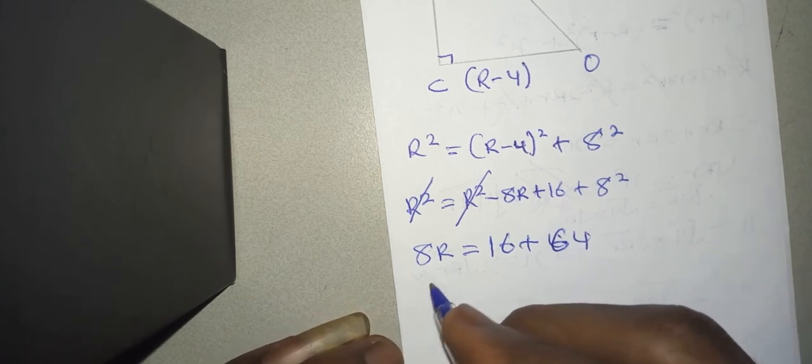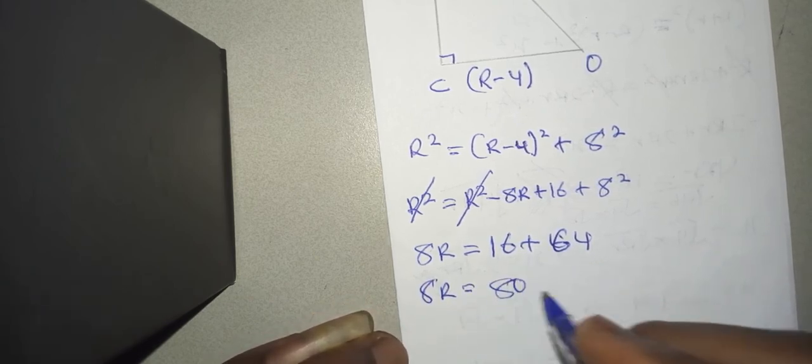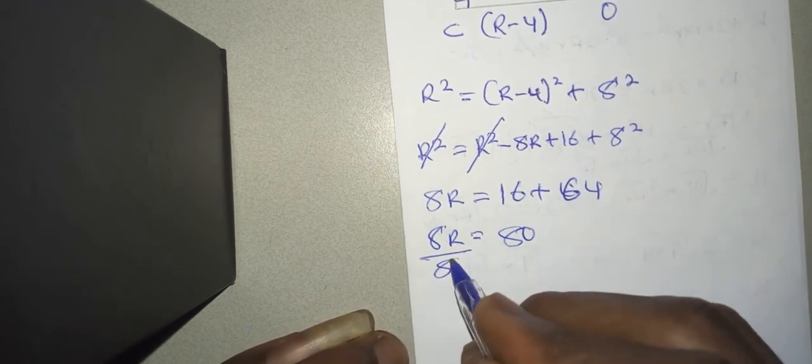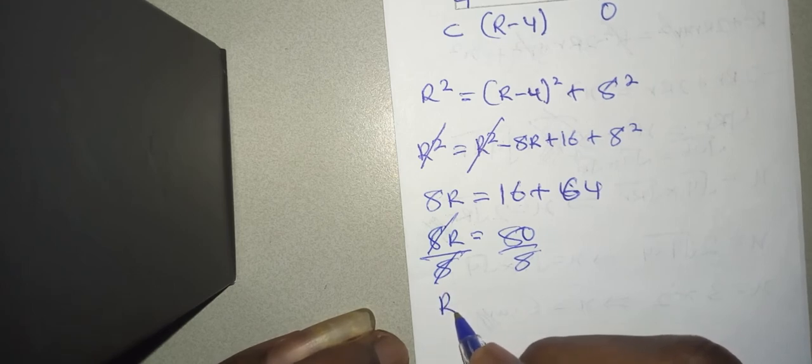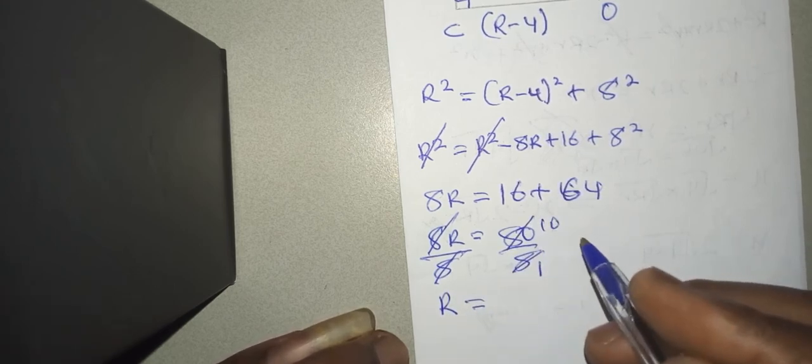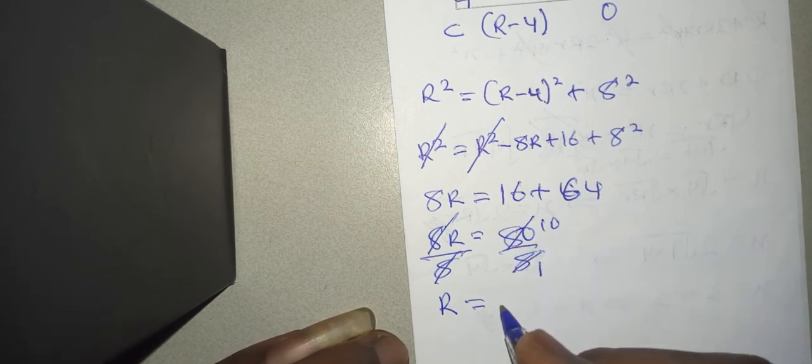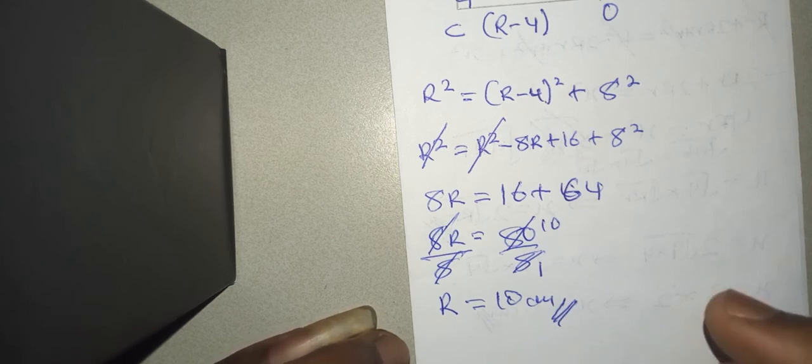So you have 8R equals 16 plus 64, which is 80. This 8 will divide that, you have R standing alone equals 10. Therefore the radius of this circle is 10 centimeters, proving that in the first method we had 10 centimeters, and here again we have 10 centimeters.